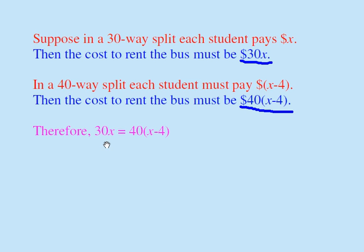Now we have a nice equation, and all we need to do is use algebra to solve it. 30X is equal to 40 times (X minus 4). Let's move to the next slide.